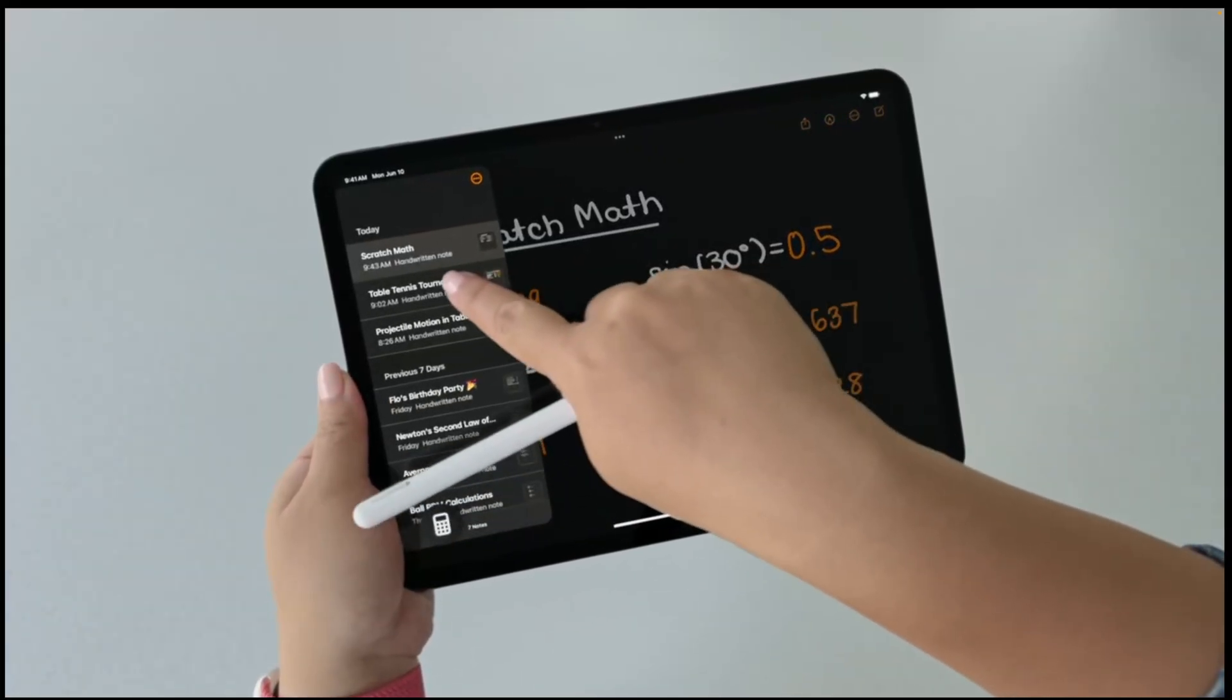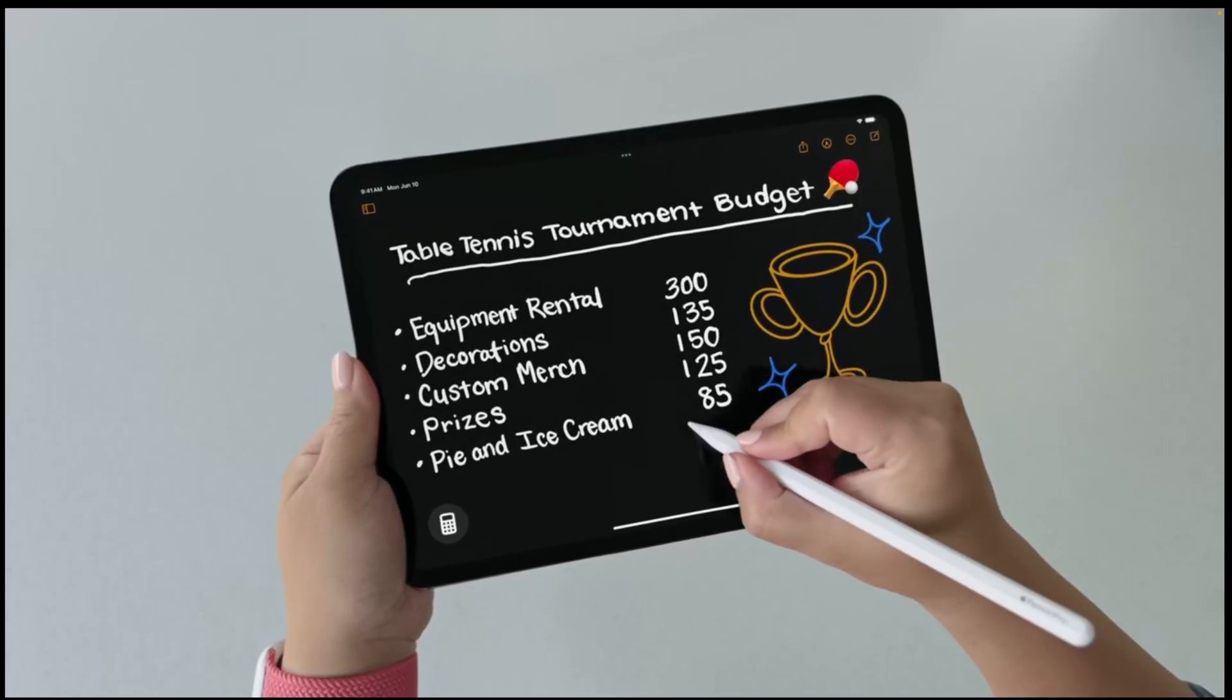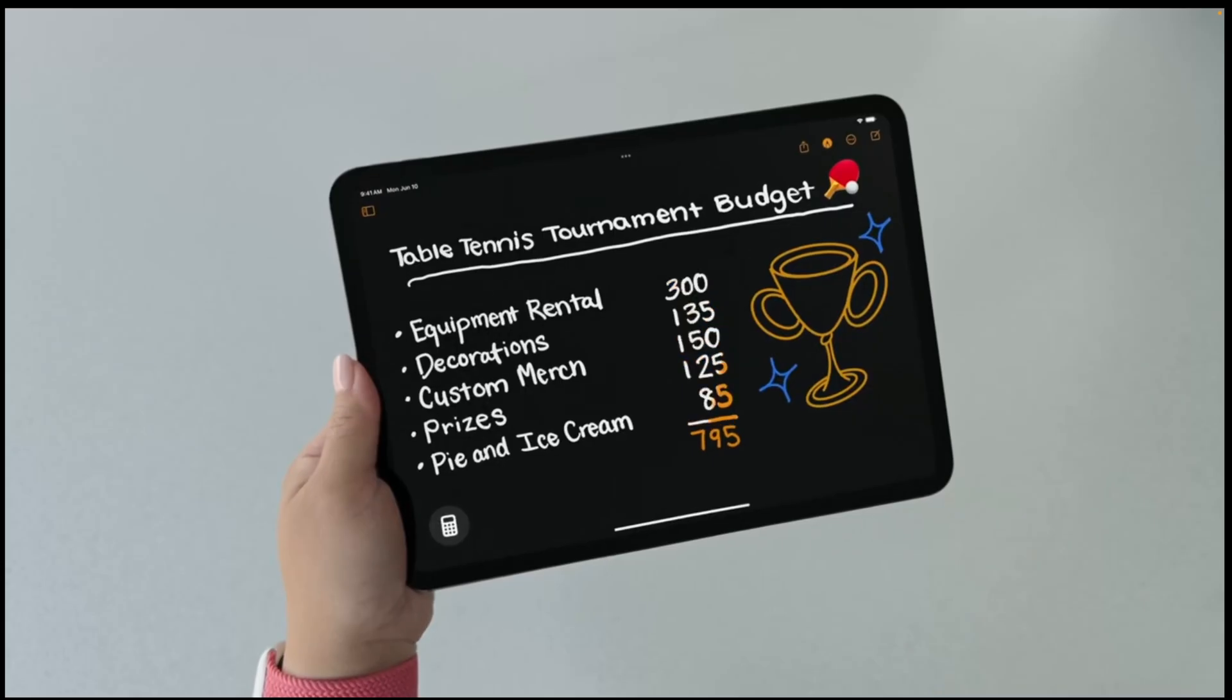Like here, where I'm working on a budget for my team's upcoming table tennis tournament. Since I'm in Math Notes, I can sum these costs quickly by just drawing a line underneath them. It's so natural.